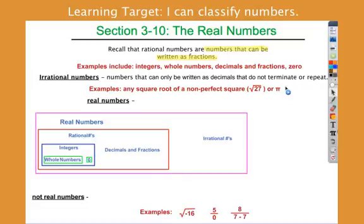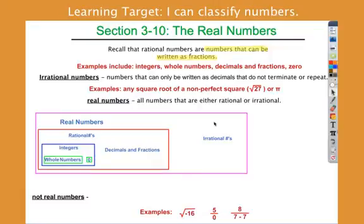If you think about what irrational behavior is in real life, irrational behavior is behavior that doesn't make sense. When we take those numbers and combine them with the rational numbers, we have what we call all of the real numbers — all the numbers that are on the number line. So that's where we've gotten so far: numbers that are either rational or irrational.